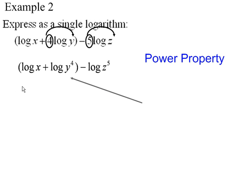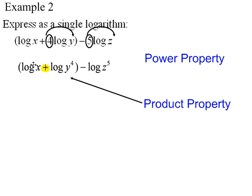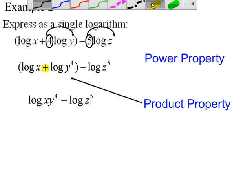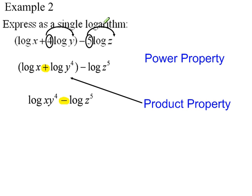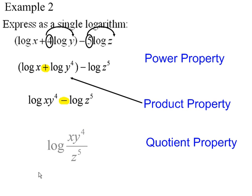We can now move on to focus on what's inside the parentheses. Two logarithmic expressions are being added with the same base, so we can use the product property to write it as a single logarithm — log of x y to the 4th power. Then bringing down minus log z to the 5th, we now have a subtraction of two logarithms. Using the quotient property, we get log of x y to the 4th divided by z to the 5th.